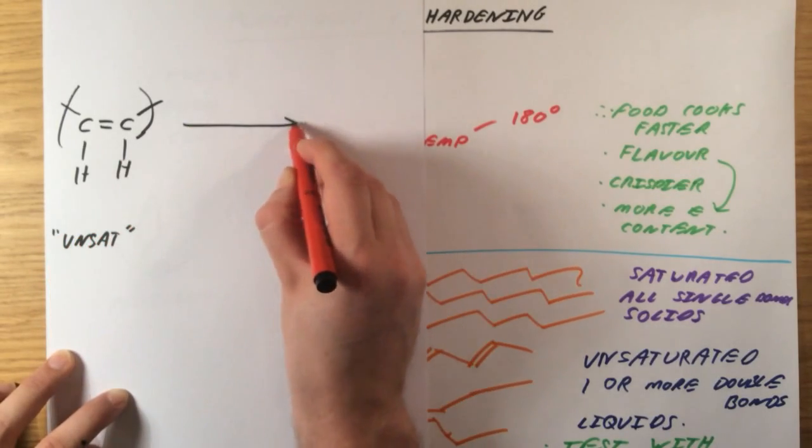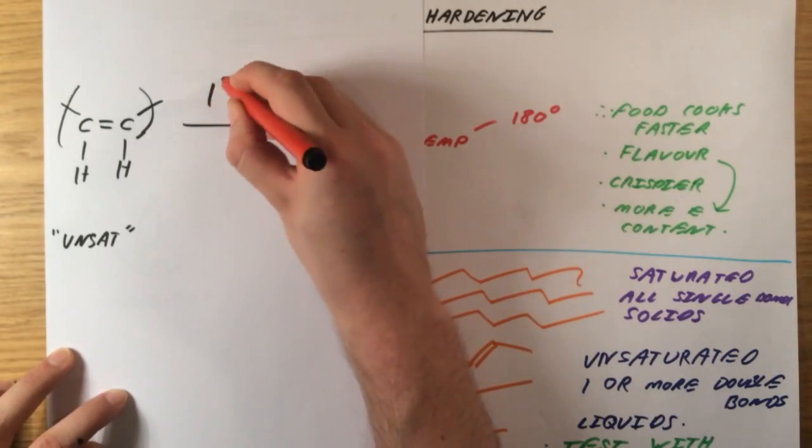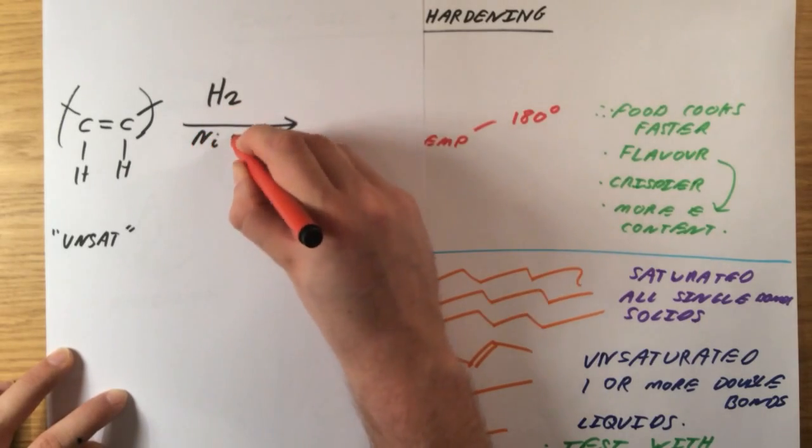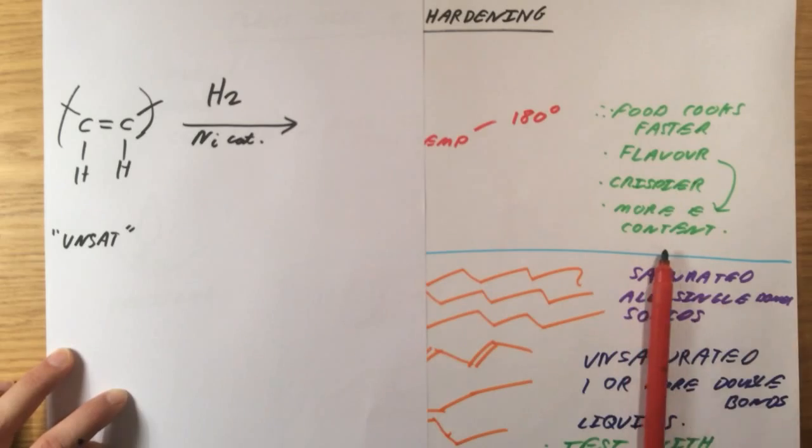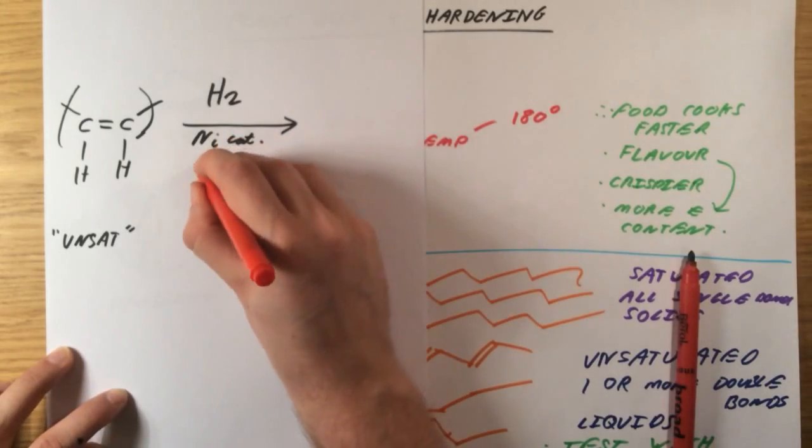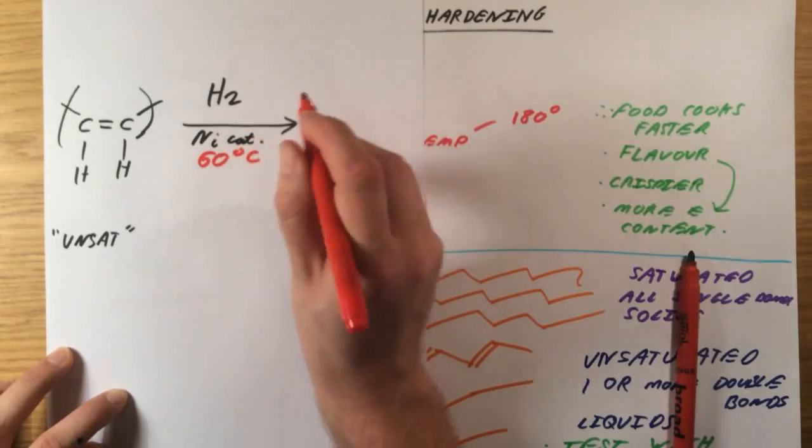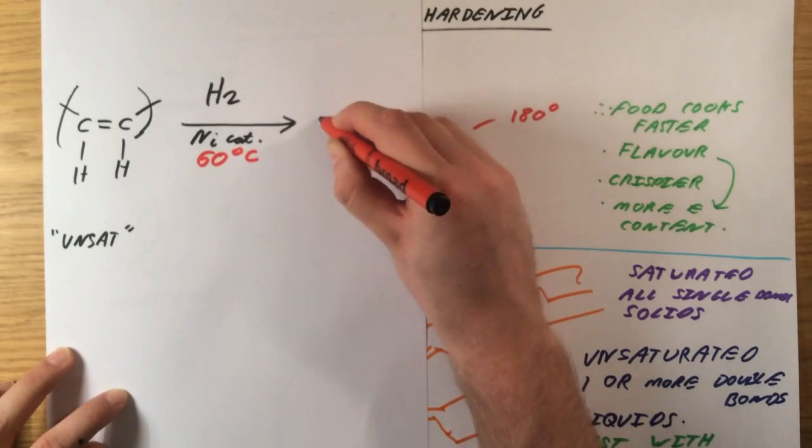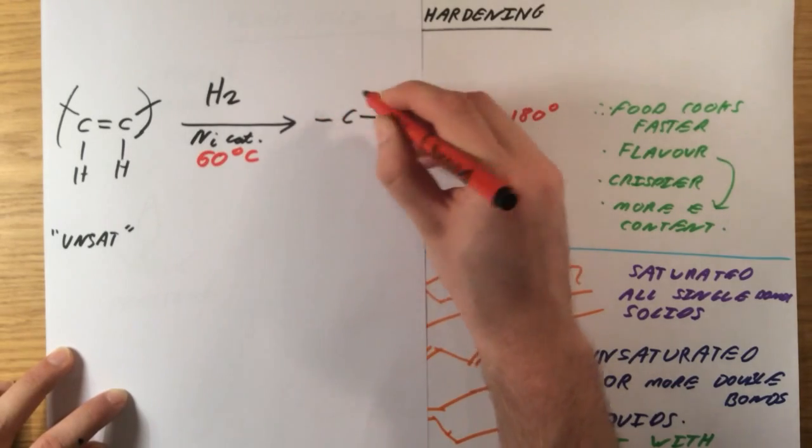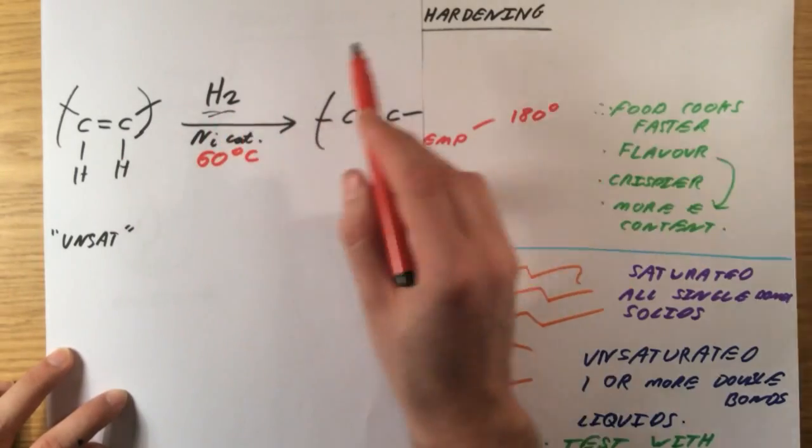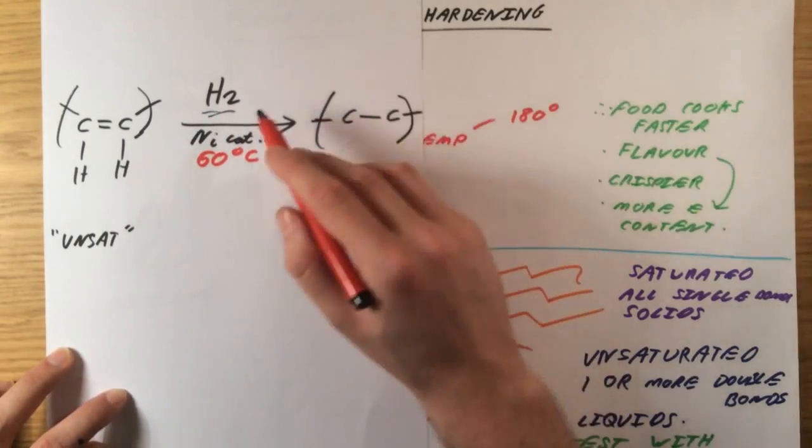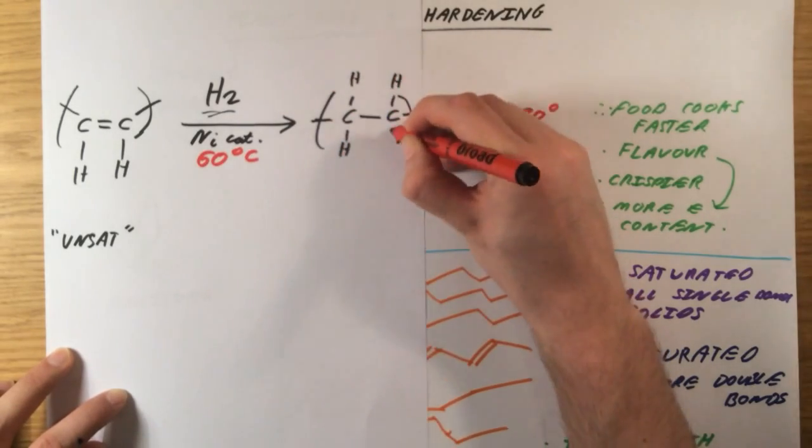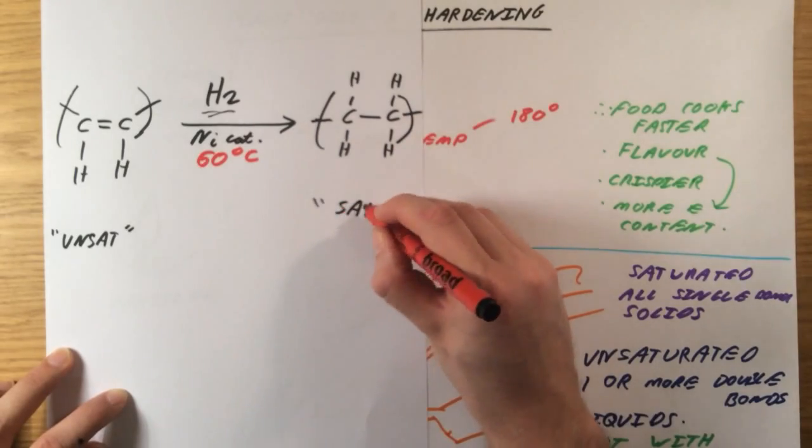What we can do is add hydrogen to this. So if we react it with H2, hydrogen, and we use a nickel catalyst, and we have to use a temperature of 60 degrees C. The examiners are very, very strict that you do learn this exactly. If you use a temperature of 60 degrees C, you can add your hydrogen across this double bond. This is very similar to the bromine water test, but this time using hydrogen. We basically add hydrogen across that, which turns this into a saturated fat.